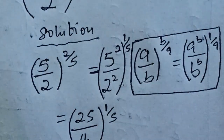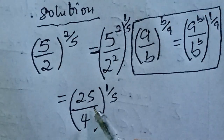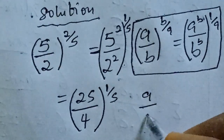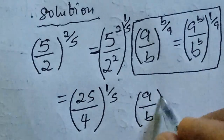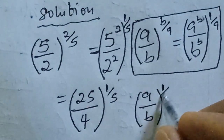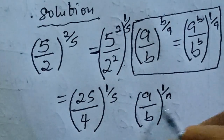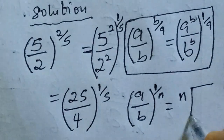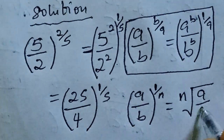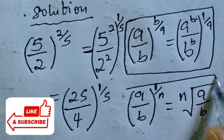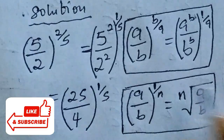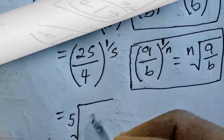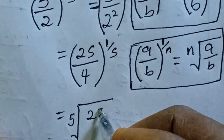From here we can simplify what we have in the brackets, and that becomes equal to five raised to power two — which gives us 25 — over two raised to power two — which gives us four — close brackets, raised to power one over five. This next step can also be approached using the identity: if we have a over b, we can write it as the n-th root of a over b.